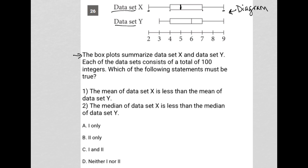So the question says the box plots summarize data set X and data set Y. Each of the data sets consists of a total of 100 integers. So that's good to know. Obviously there's a data set here behind these whisker plots that we do not see. I have no idea how they're distributed necessarily.